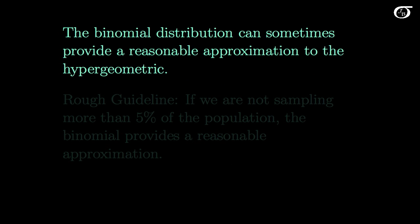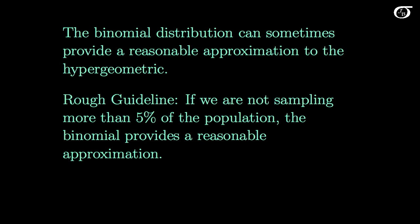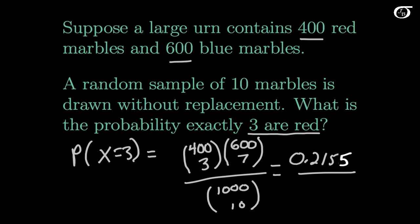The binomial distribution can sometimes provide a reasonable approximation to the hypergeometric. And it provides a reasonable approximation if we're not sampling a very large proportion of the population. And as a rough guideline, if we are not sampling more than 5% of the population, then the binomial provides a reasonable approximation. And if we took a look back at this example here, we only sampled 10 marbles from the 1,000 total. So we were only sampling 1% of our entire population. And so it shouldn't be too much of a surprise that the binomial distribution actually provided a reasonable approximation in this case.